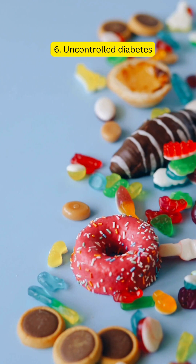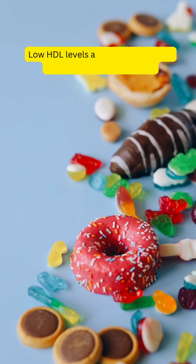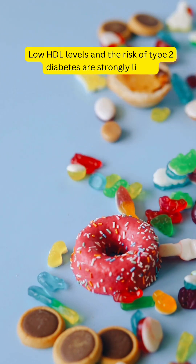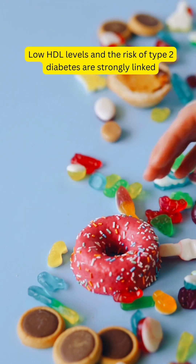6. Uncontrolled diabetes. Low HDL levels and the risk of type 2 diabetes are strongly linked.